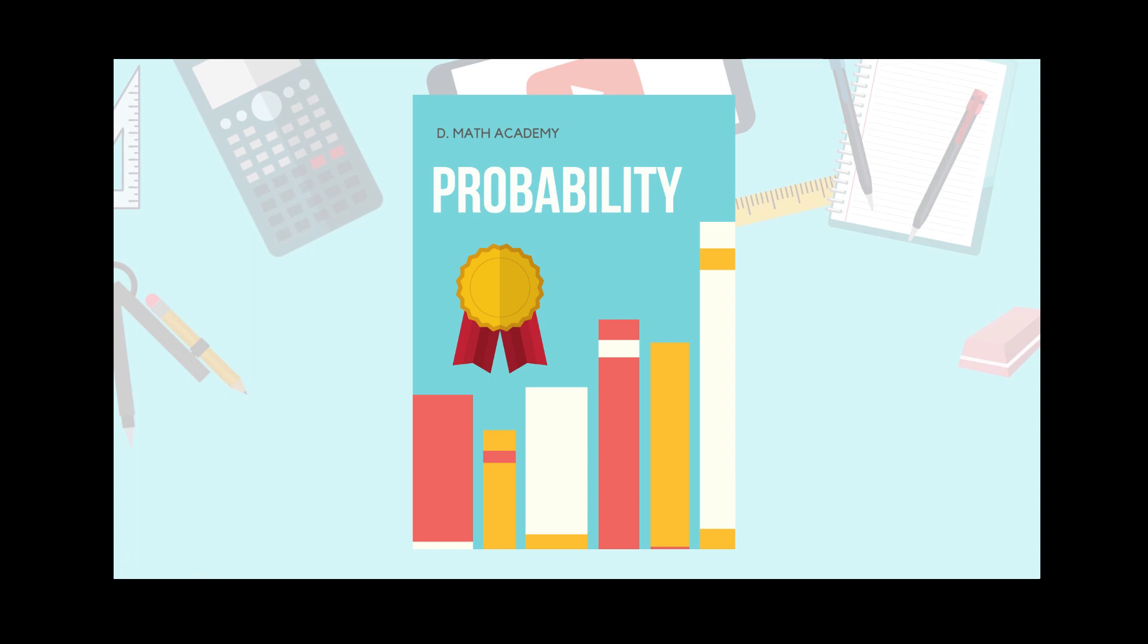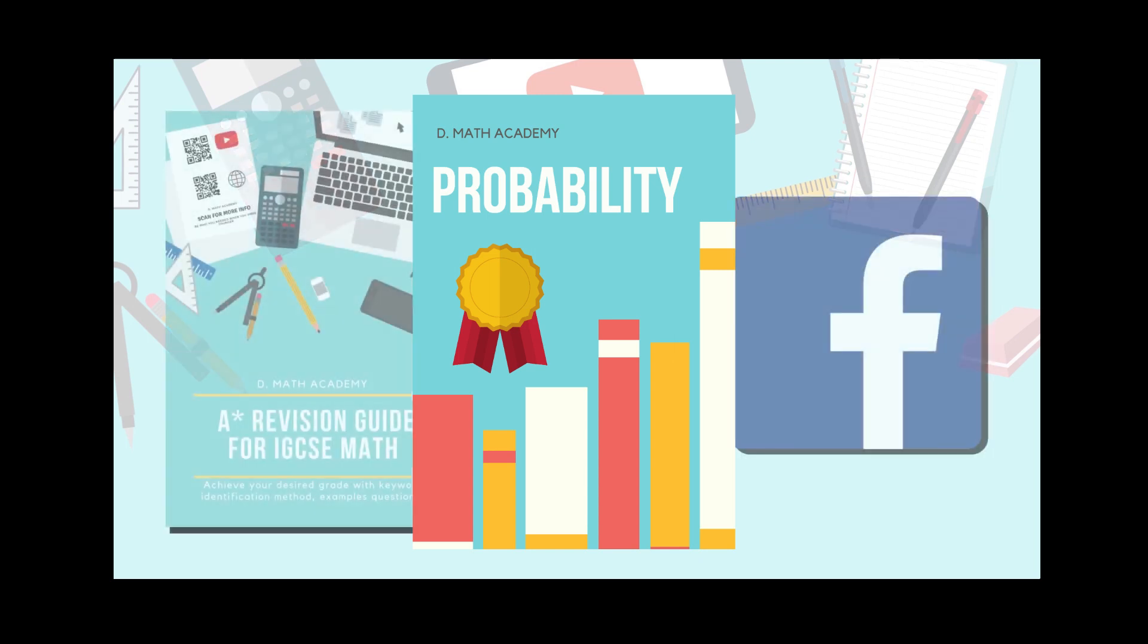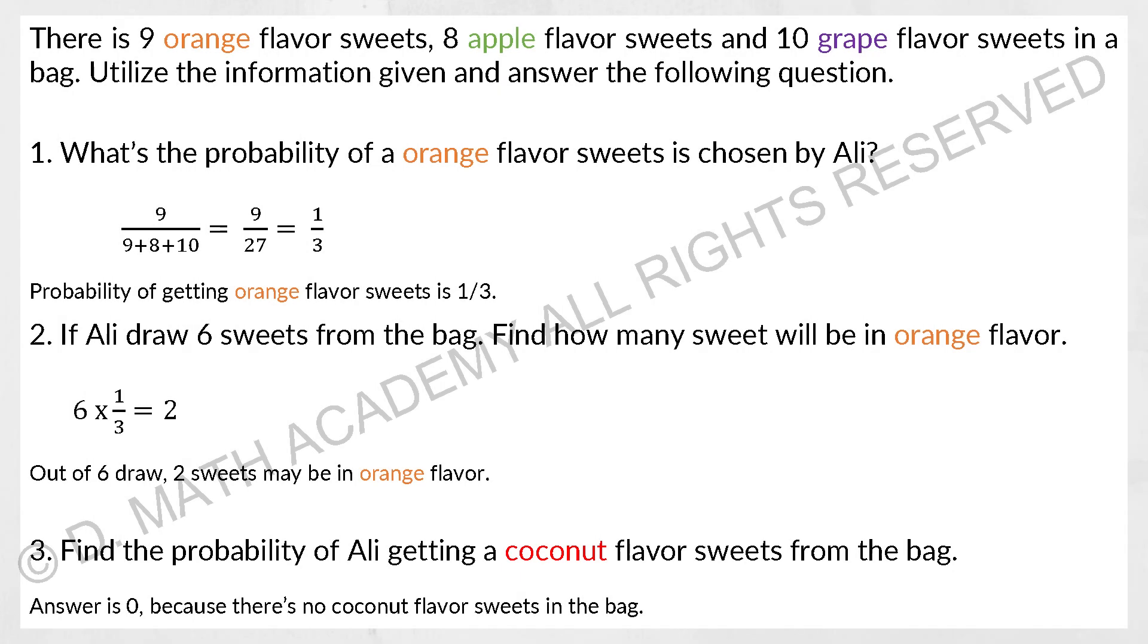So the next chapter, I've included about six questions here which cover every single type of probability question. Let's say for the first one, there's nine orange flavor sweets, eight apple flavor sweets, and ten grape flavor sweets in the bag. Utilize the information given and answer the following question. What is the probability of an orange flavor sweet is chosen by Ali?